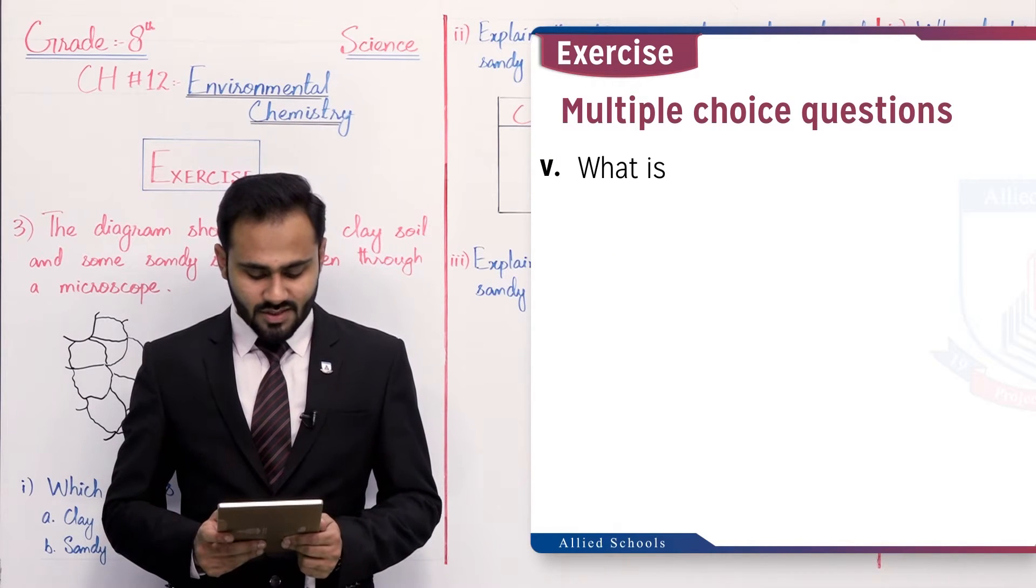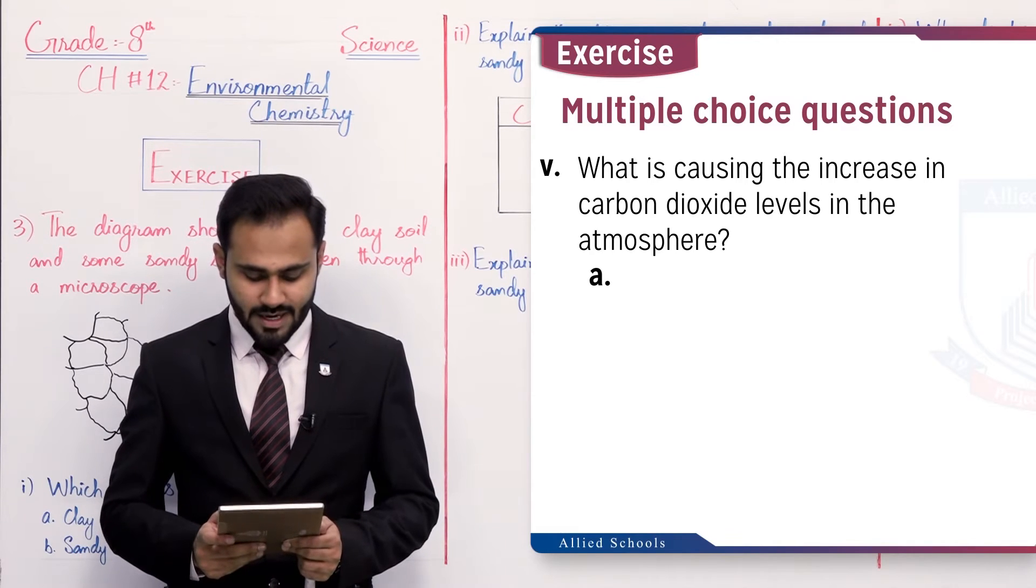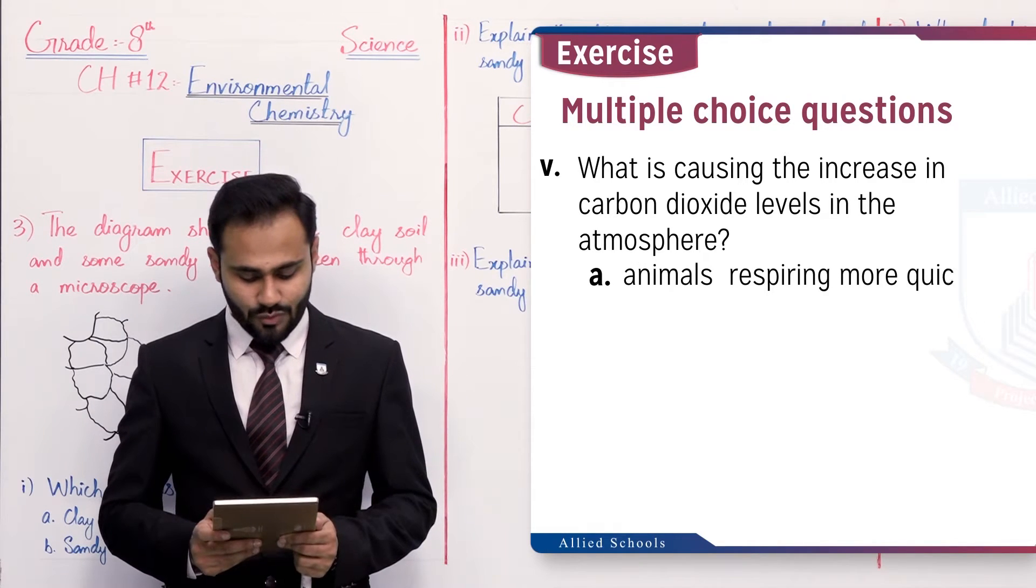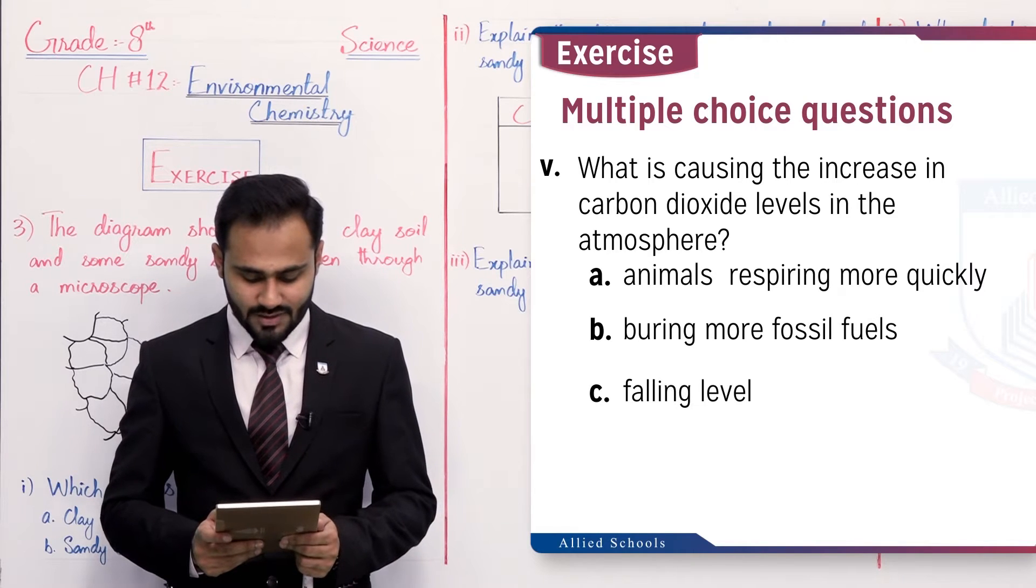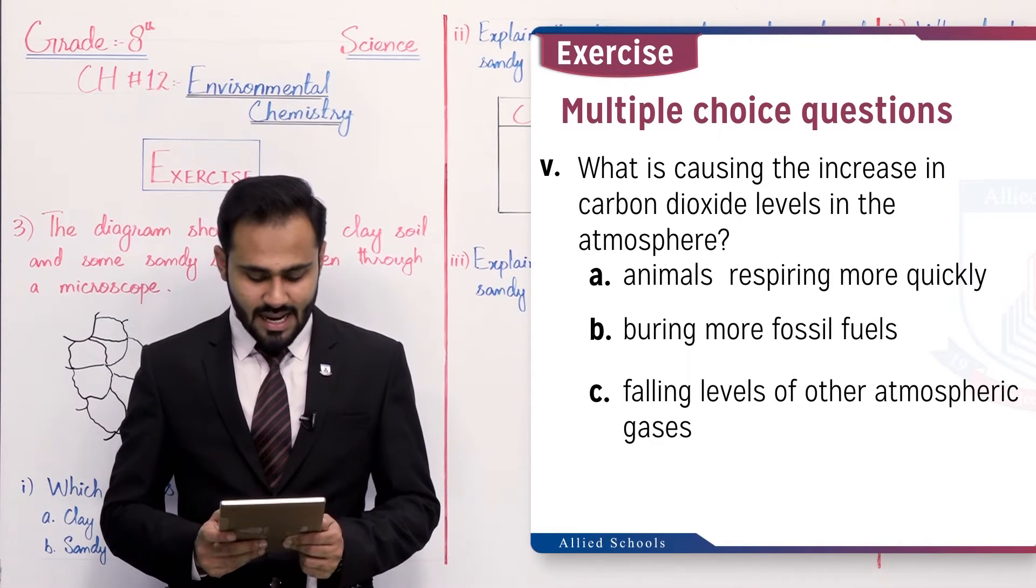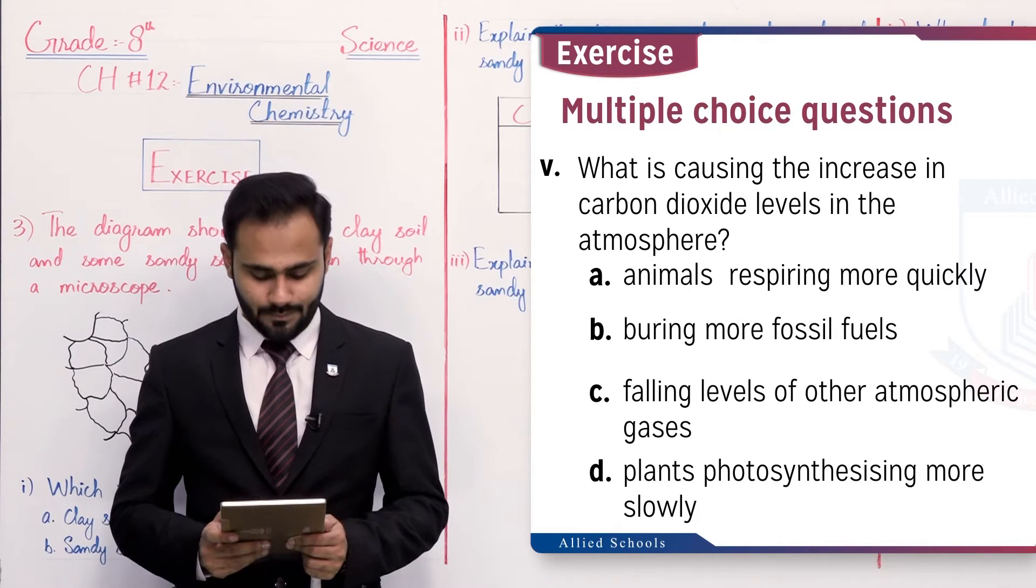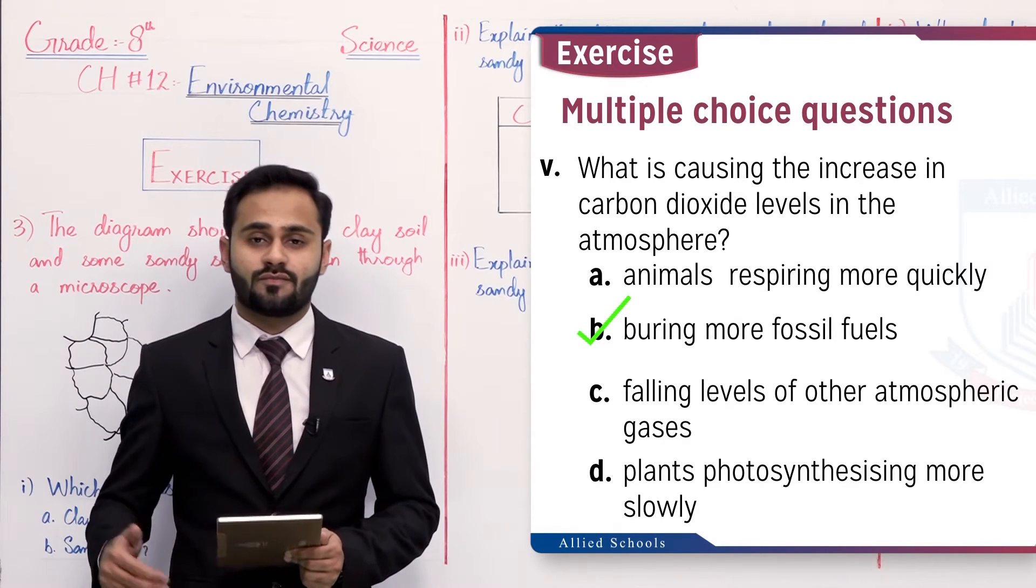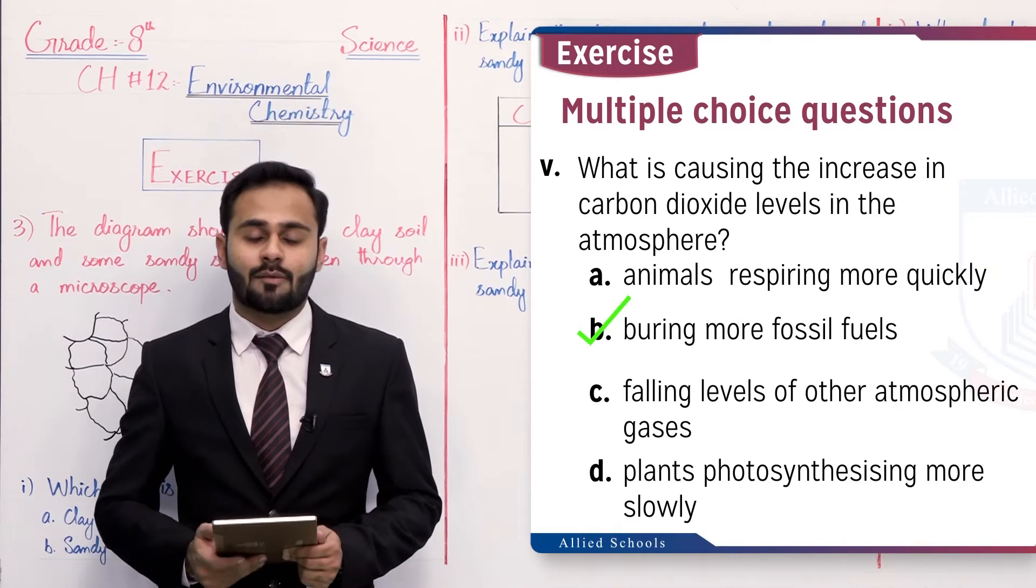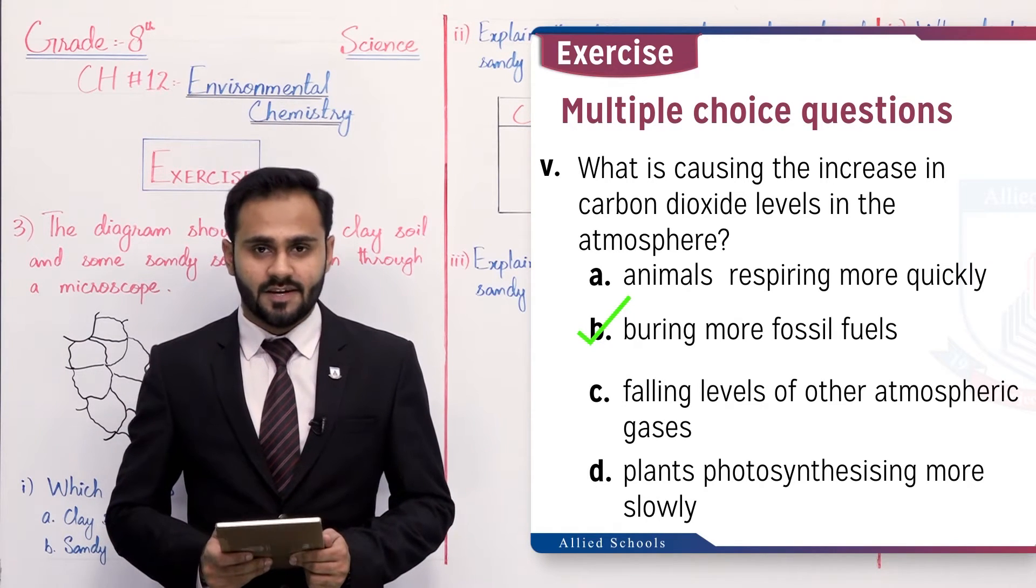Fifth: what is causing the increase in carbon dioxide levels in the atmosphere? A: animals respiring more quickly, B: burning more fossil fuel, C: falling levels of other atmospheric gases, and D: plants photosynthesizing more slowly. The option B is correct, that is burning more fossil fuel. Jitna hum fossil fuel zyada burn karte jayenge, utni zyada wahan par carbon dioxide gas produce hogi, jis ki wajah se global warming rise karti hai.